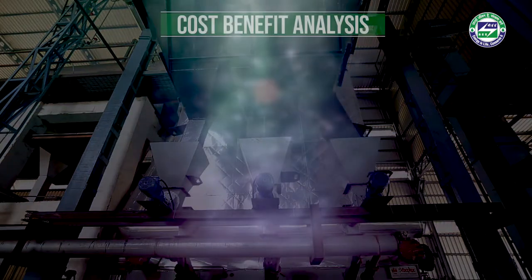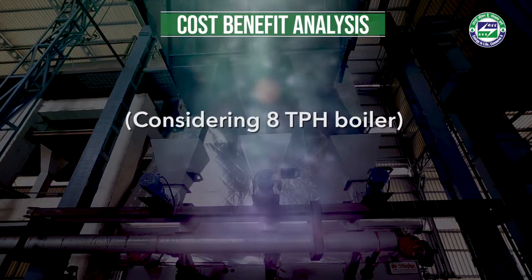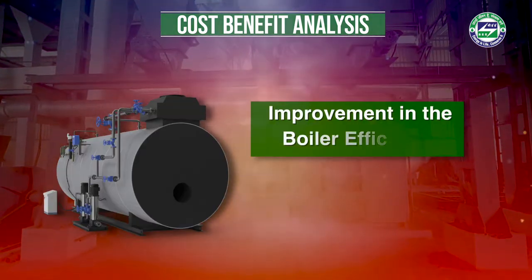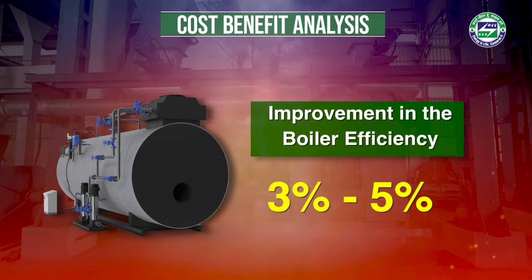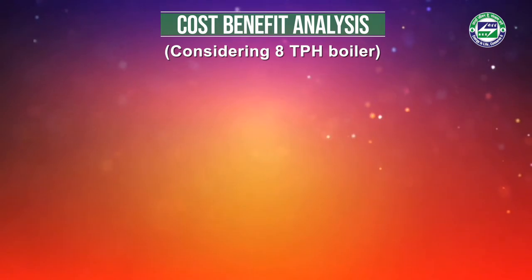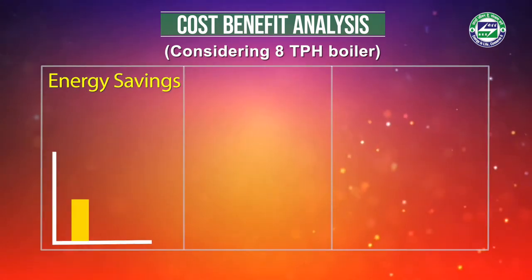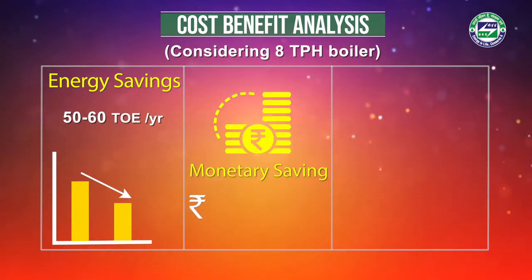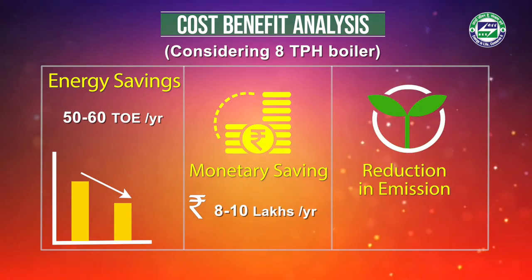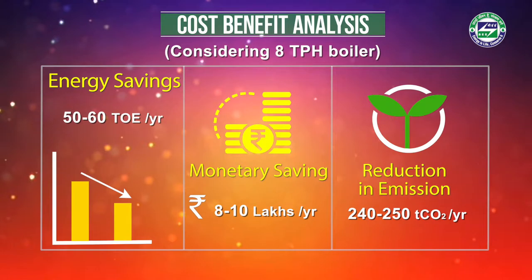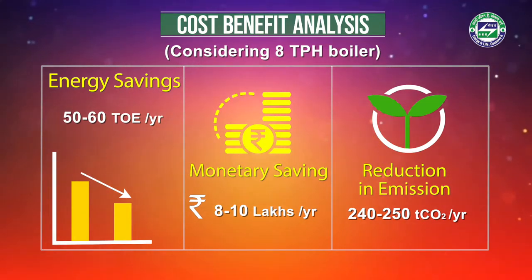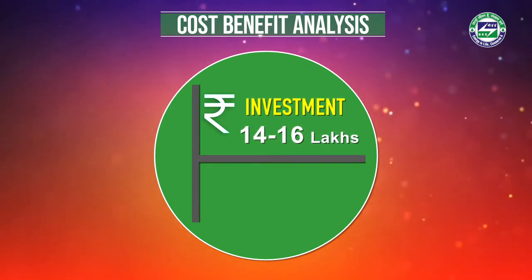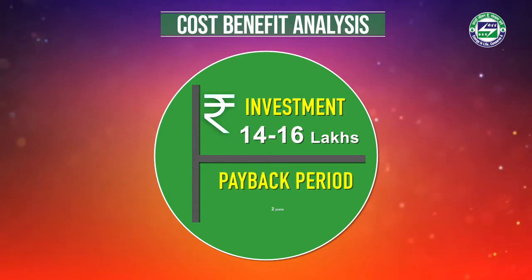To understand the cost-benefit analysis, consider an 8 TPH furnace. The installation of the system will lead to an improvement in boiler efficiency by 3–5%. For an 8 TPH boiler, this leads to a saving of 50–60 tons of oil equivalent of energy, monetary savings of Rs. 8–10 lakhs, and GHG emission reduction of 240 to 250 tons of carbon dioxide annually. The investment required is Rs. 14–16 lakhs, which can be recovered within a period of two years.